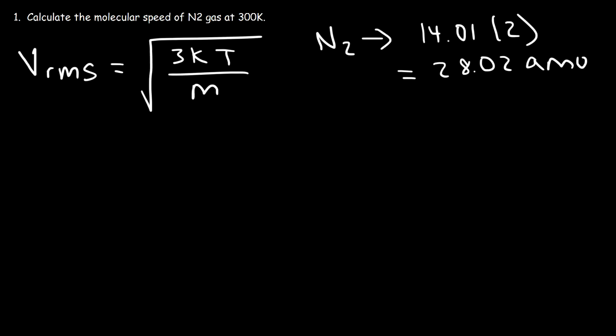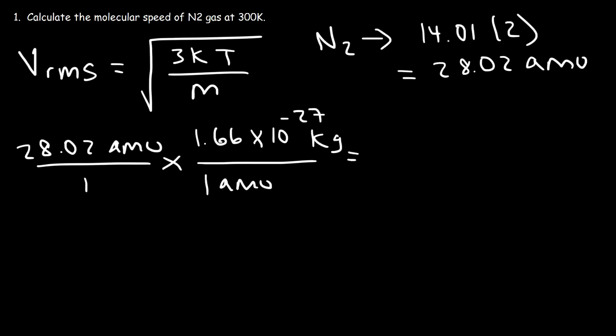Now we need to convert atomic mass units to kilograms. And the conversion is pretty simple. You need to know that one atomic mass unit is 1.66 times 10 to the negative 27 kilograms. So let's multiply those two numbers. So you should get 4.651 times 10 to the negative 26 kilograms.